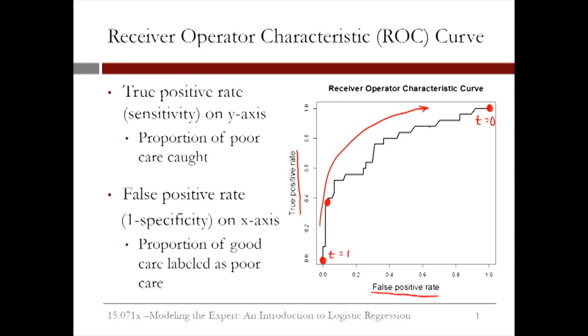On the other hand, at the point (0.6, 0.9), you're correctly labeling about 90% of the poor care cases, but have a false positive rate of 60%.